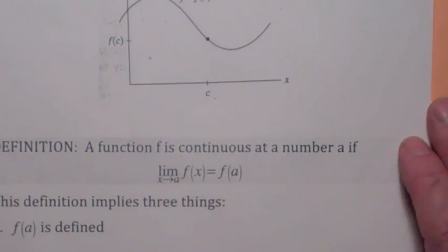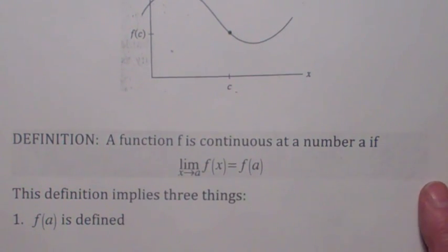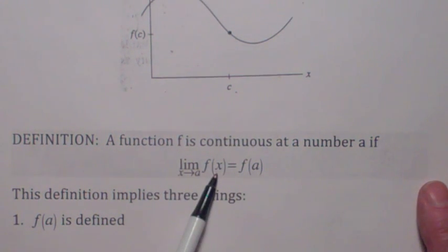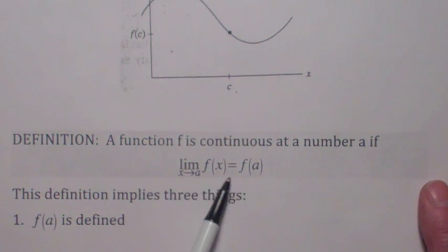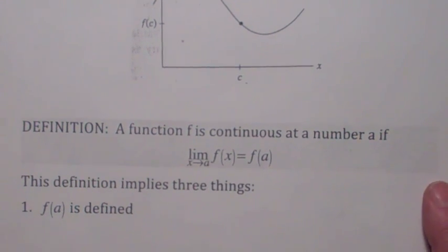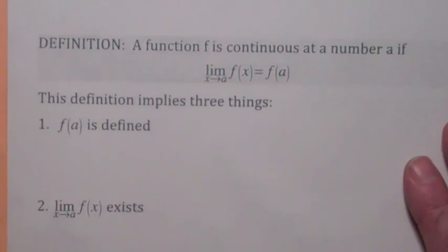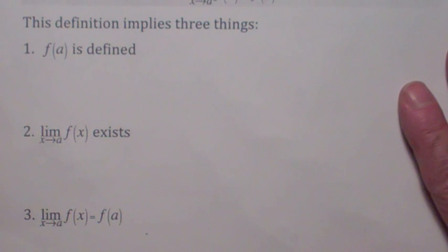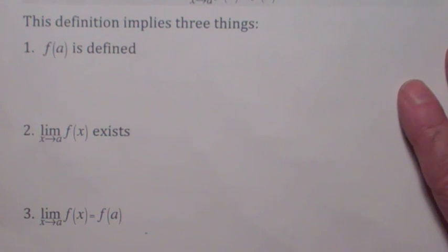And that's how we define a function to be continuous at x equals a. The limit as x goes to a of f of x has to exist, the function has to be defined there, and they're equal. For doing some of these problems, it's nice to bring it up into three conditions and look at each one separately. If a function is not continuous at a point, you have to say which of these three conditions is not satisfied.